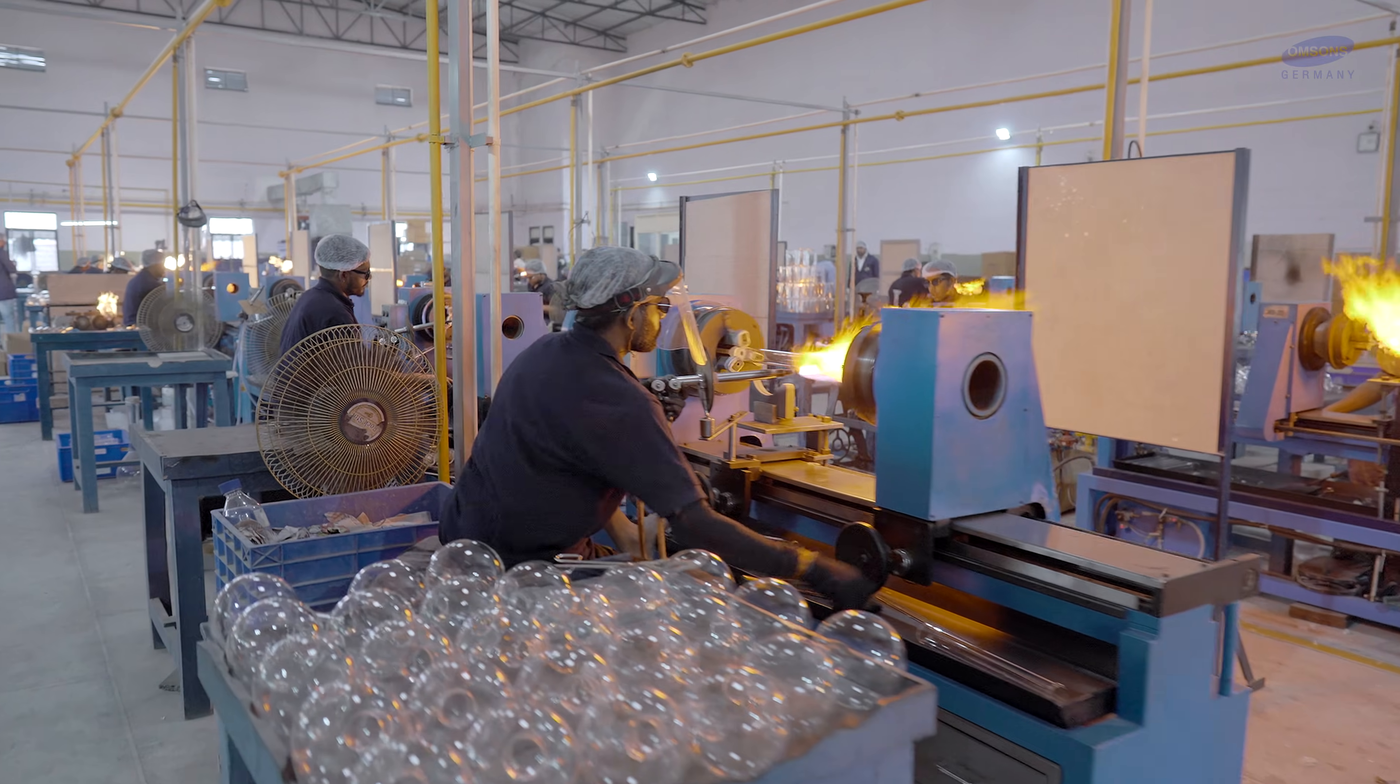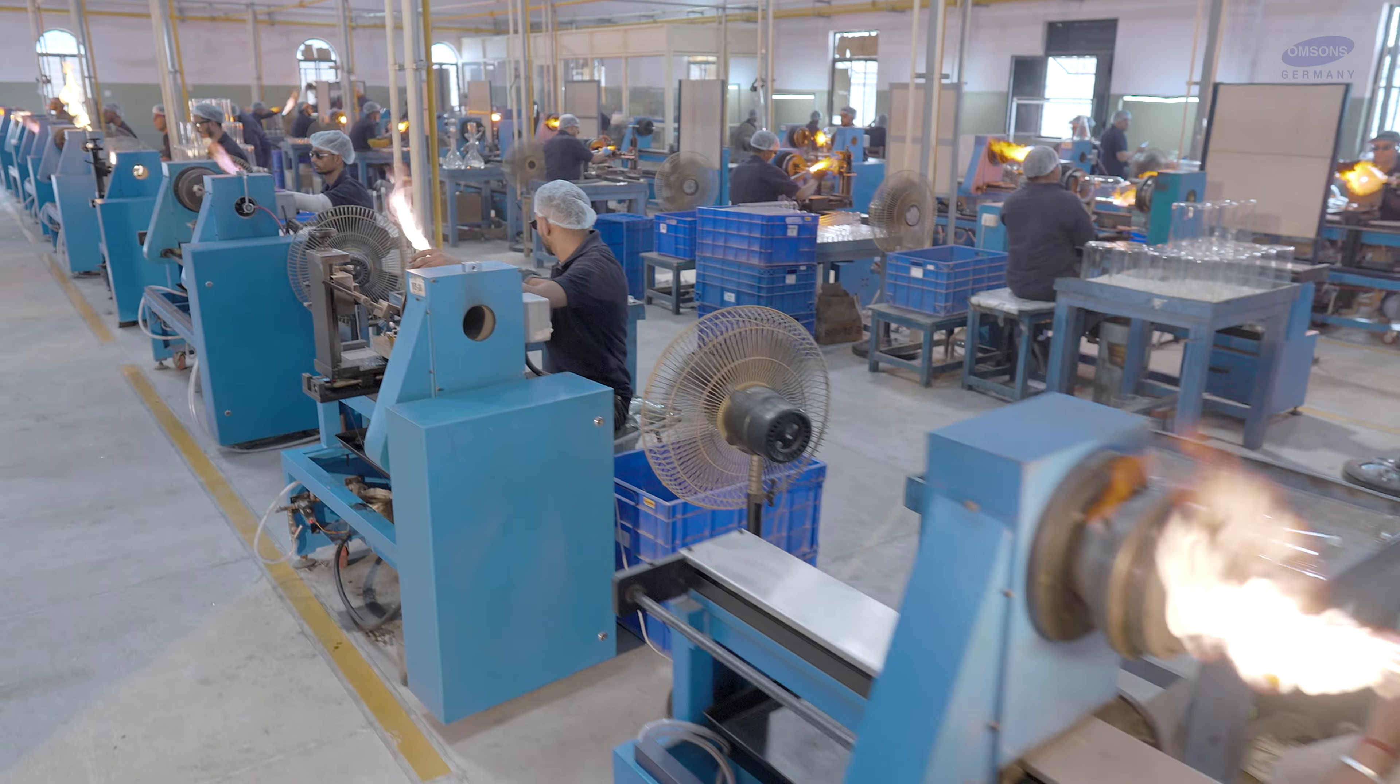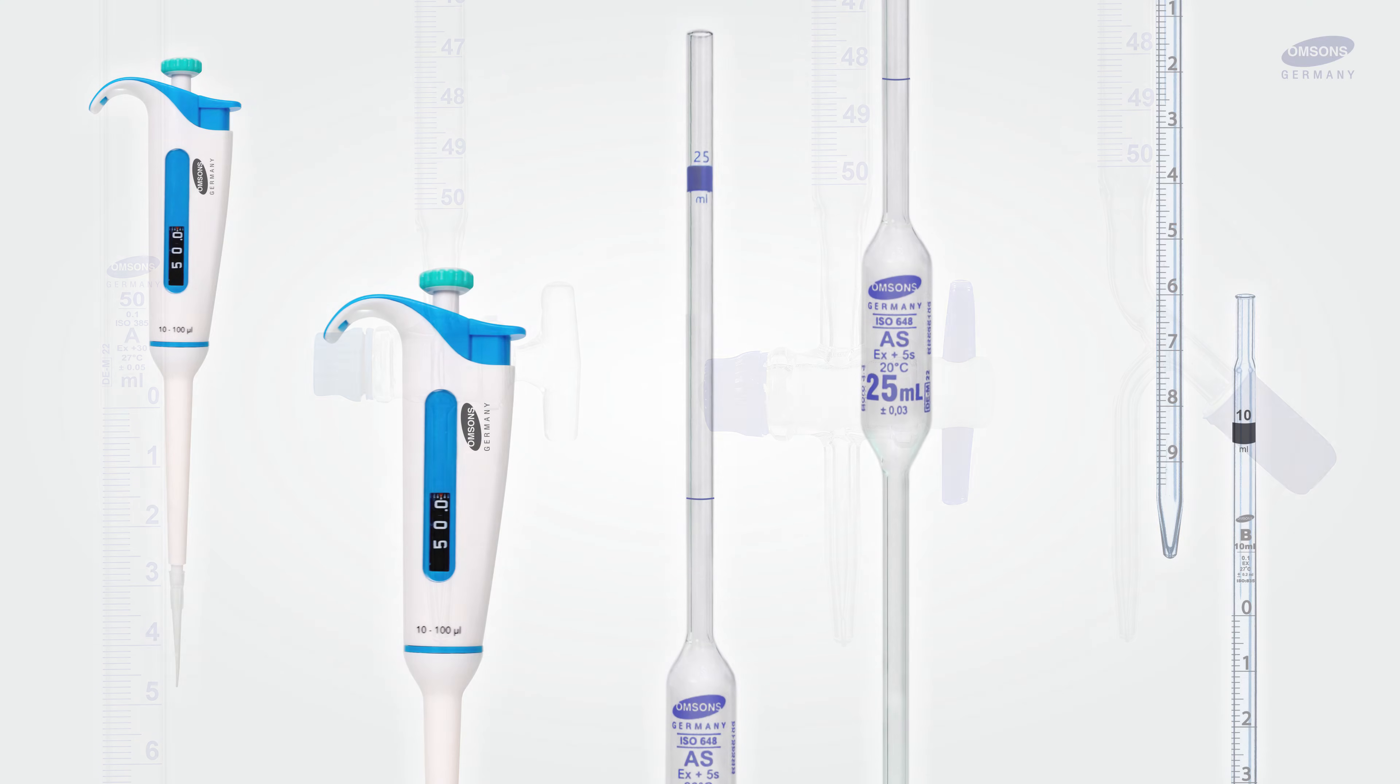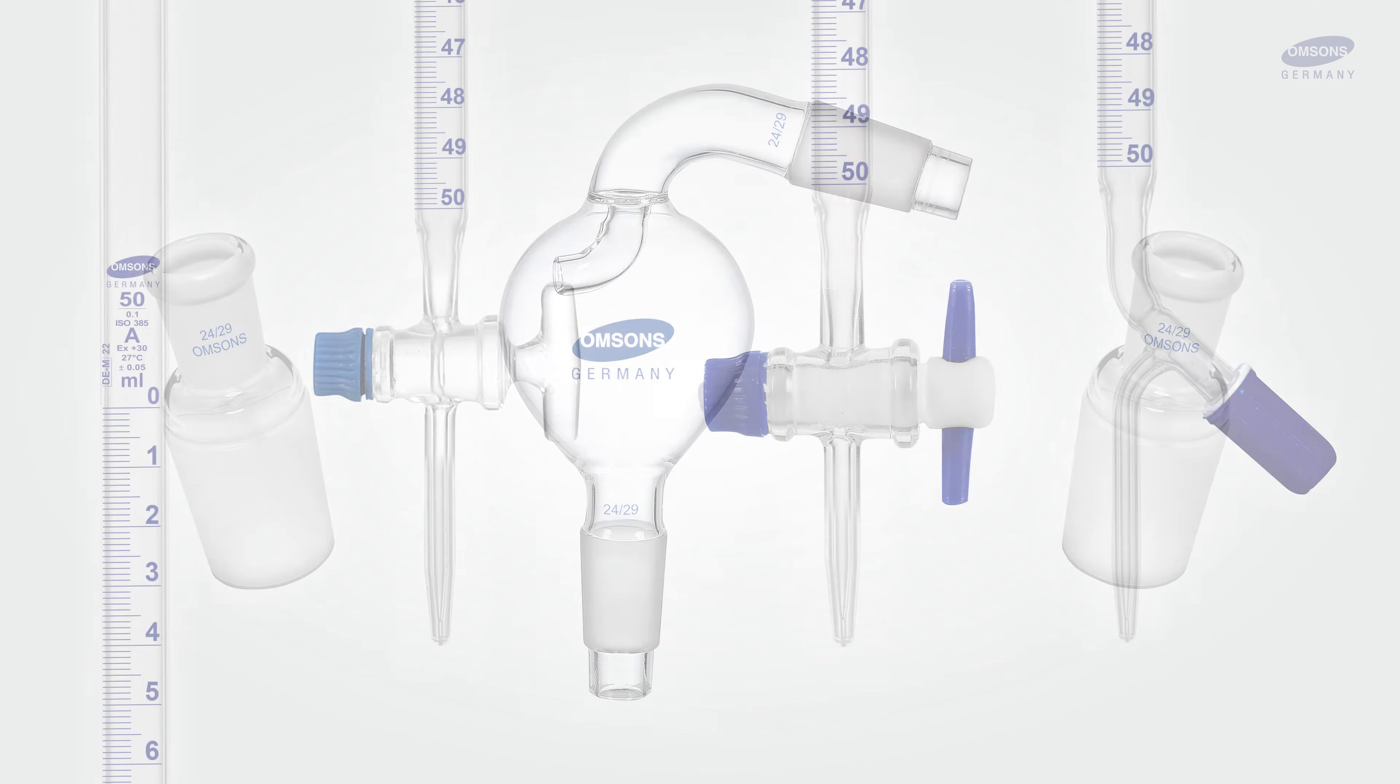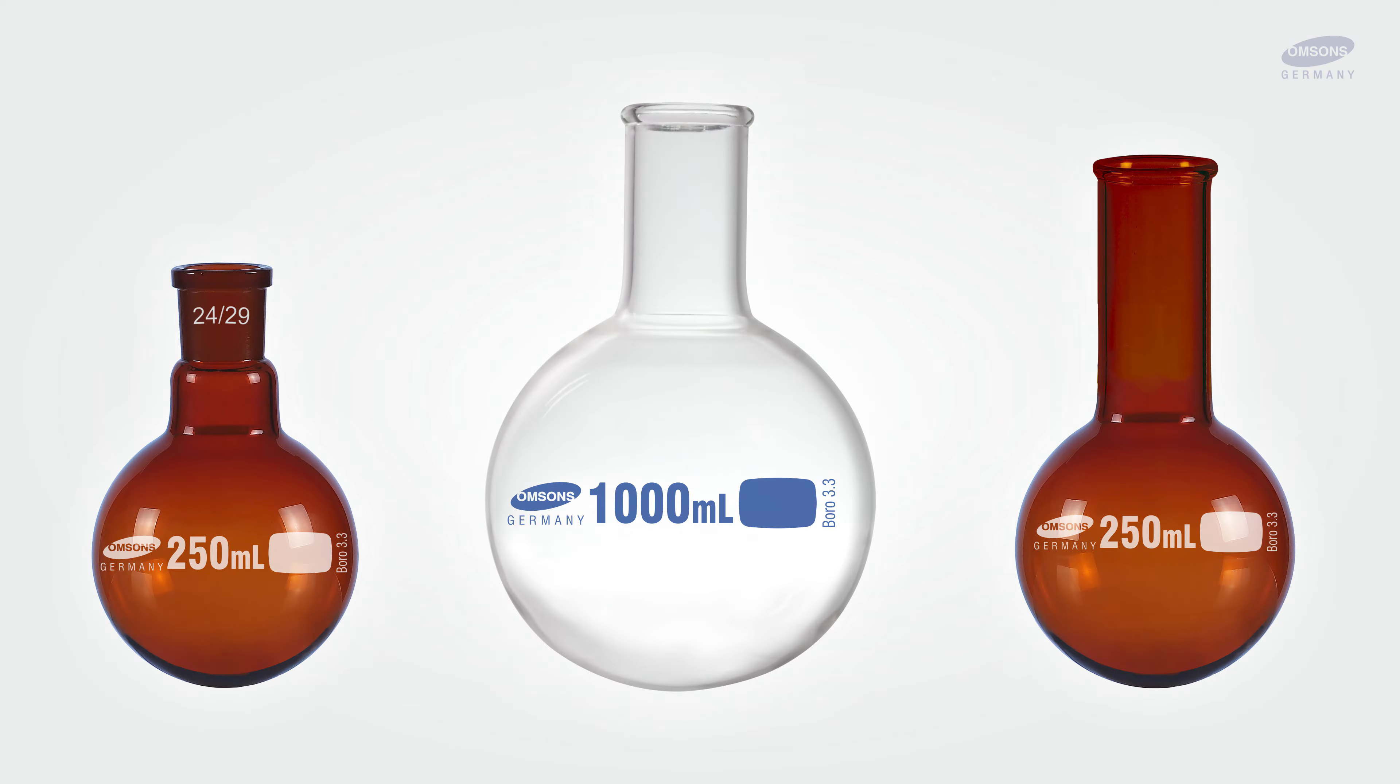Our product line: We at Omson's manufacture more than 10,000 types of high quality and precision products. Our product range includes pipettes, burettes, adapters, beakers, round bottom flasks,